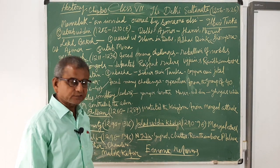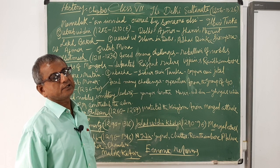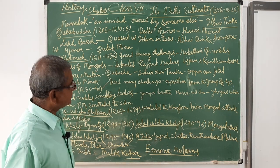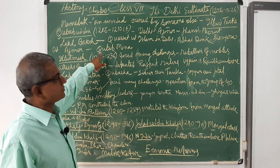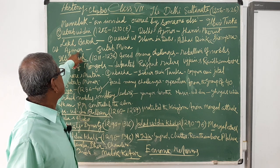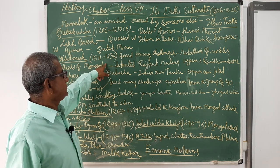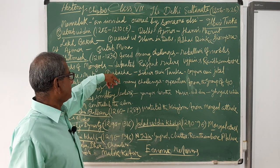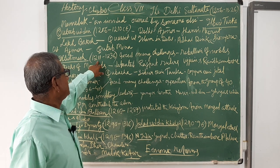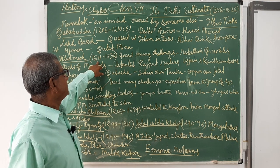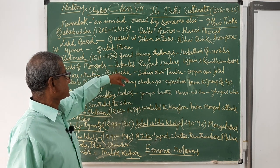Aram Shah was an unworthy ruler, so Iltutmish, the most favorite slave of Qutbuddin Aibak, overthrew him and captured power. Iltutmish ruled from 1211 to 1236 CE.